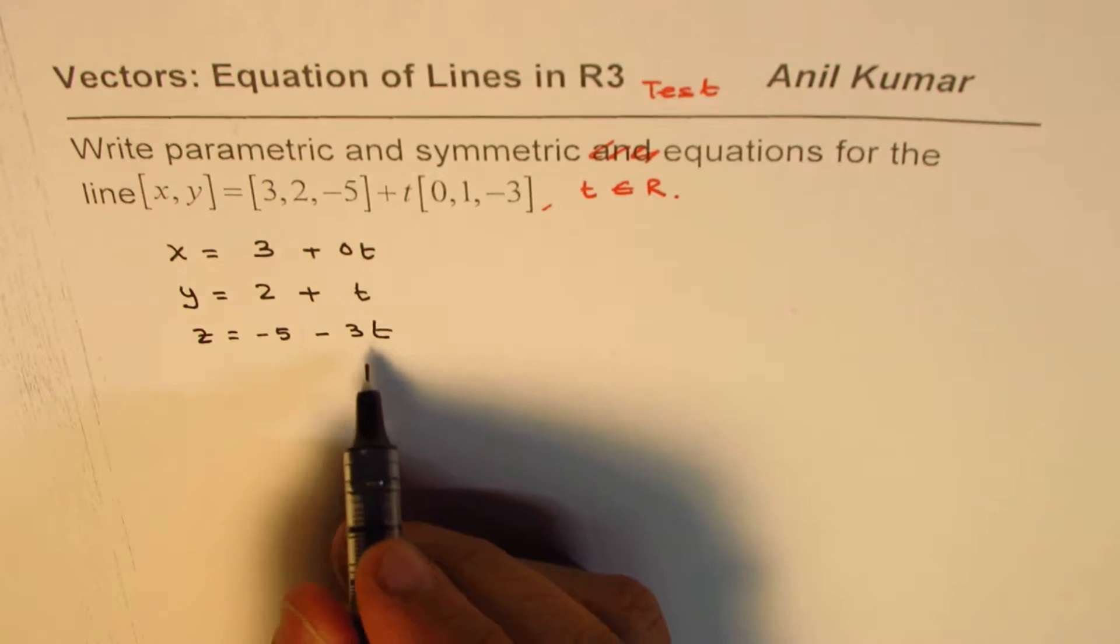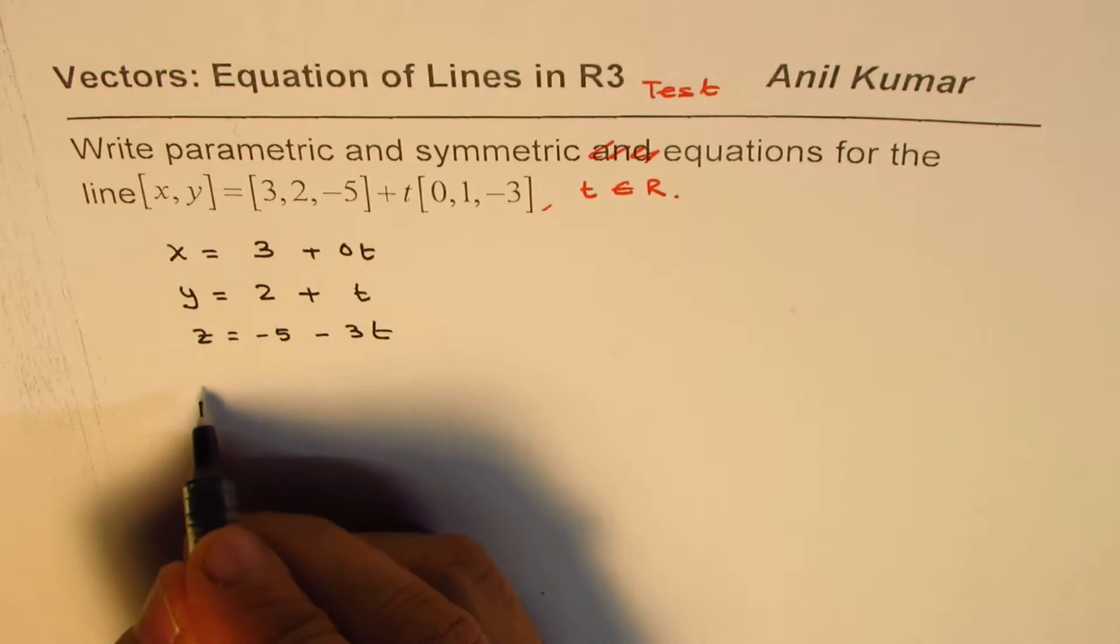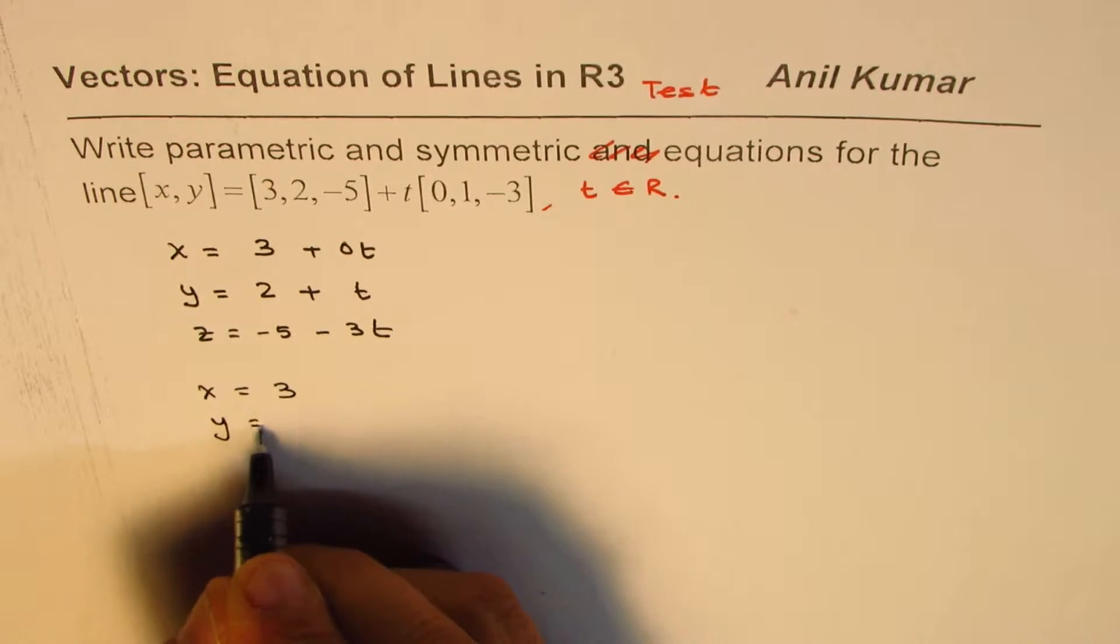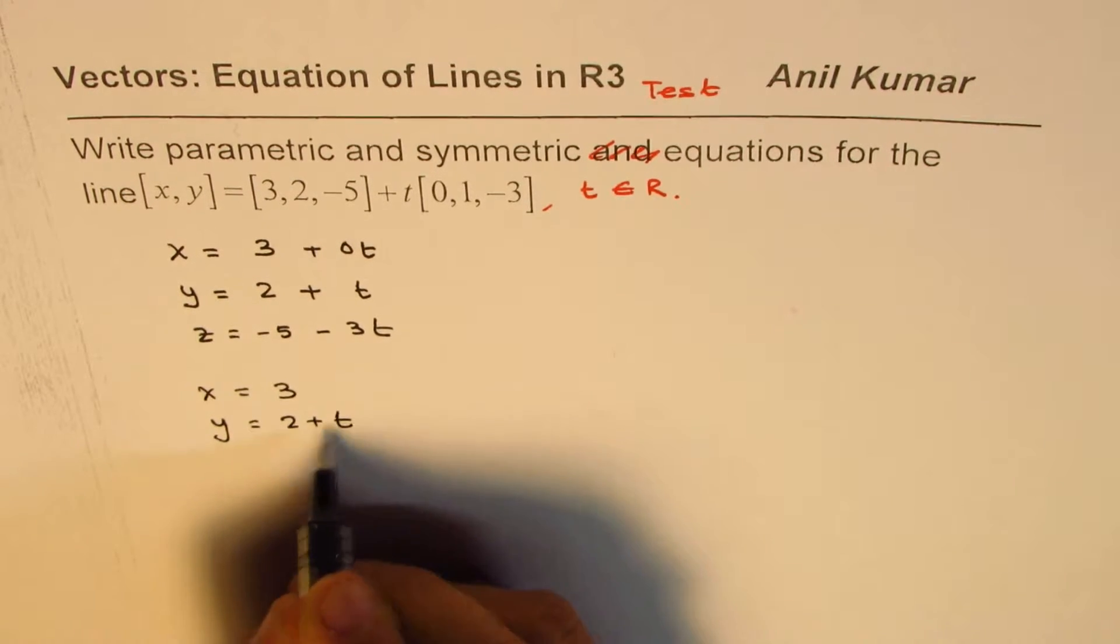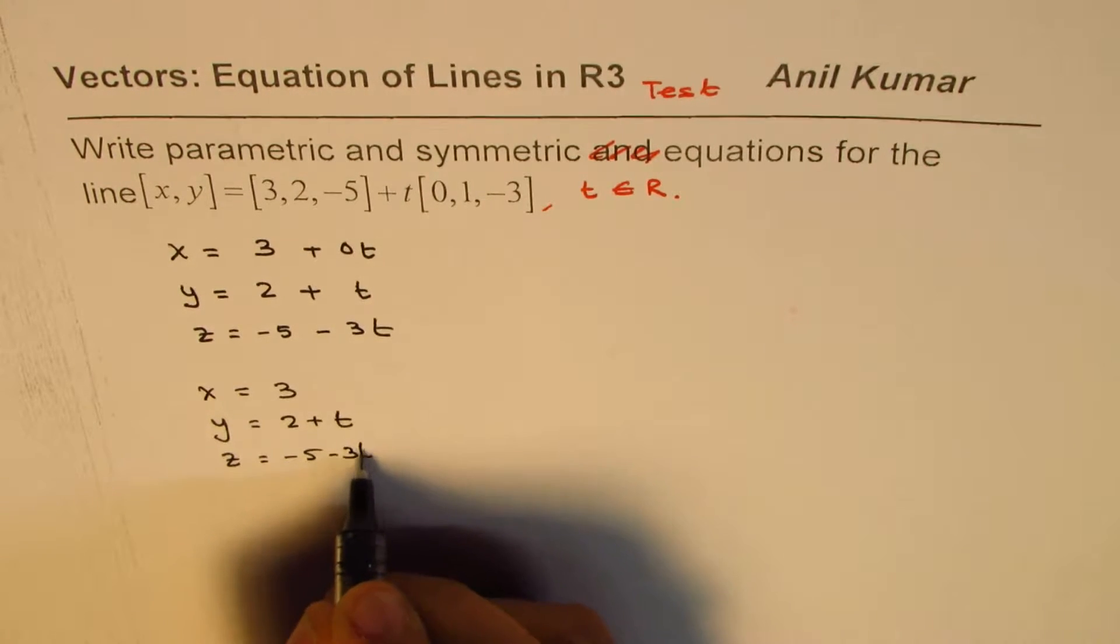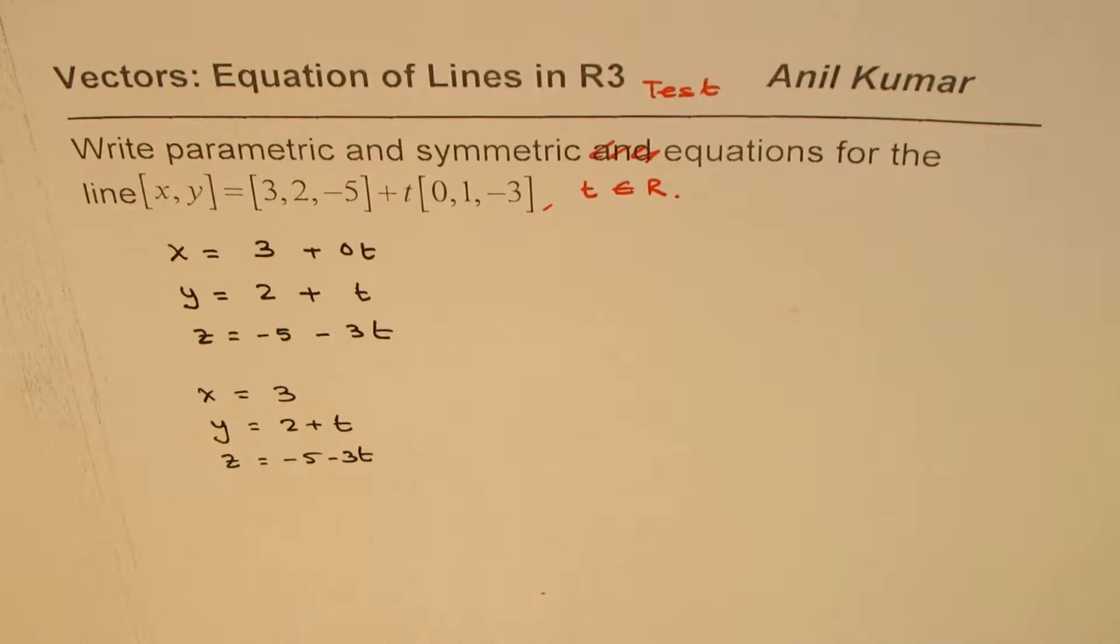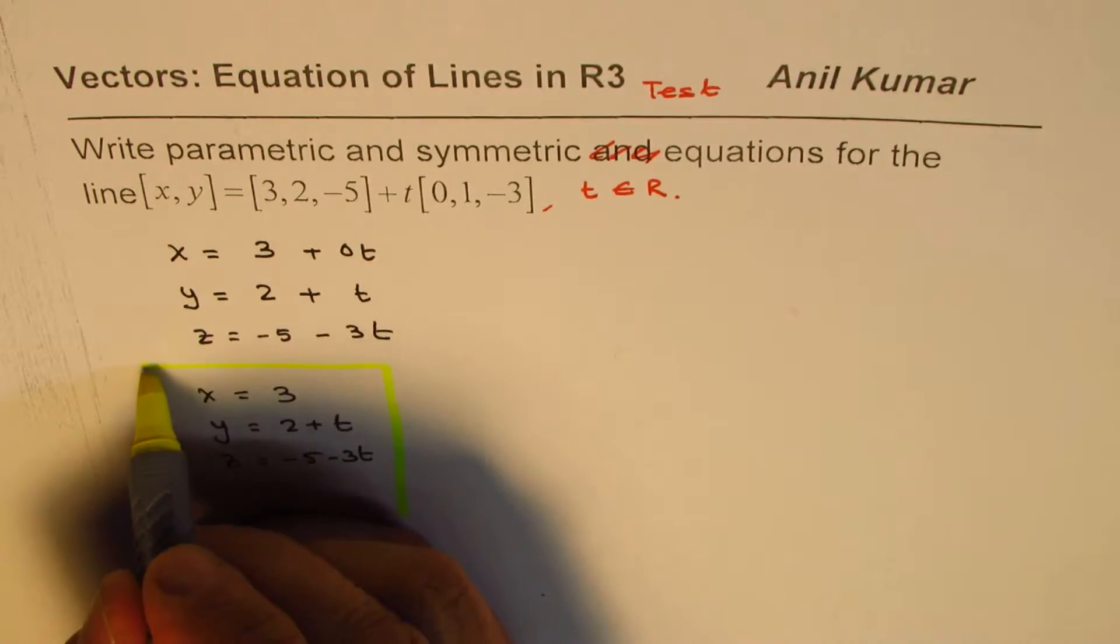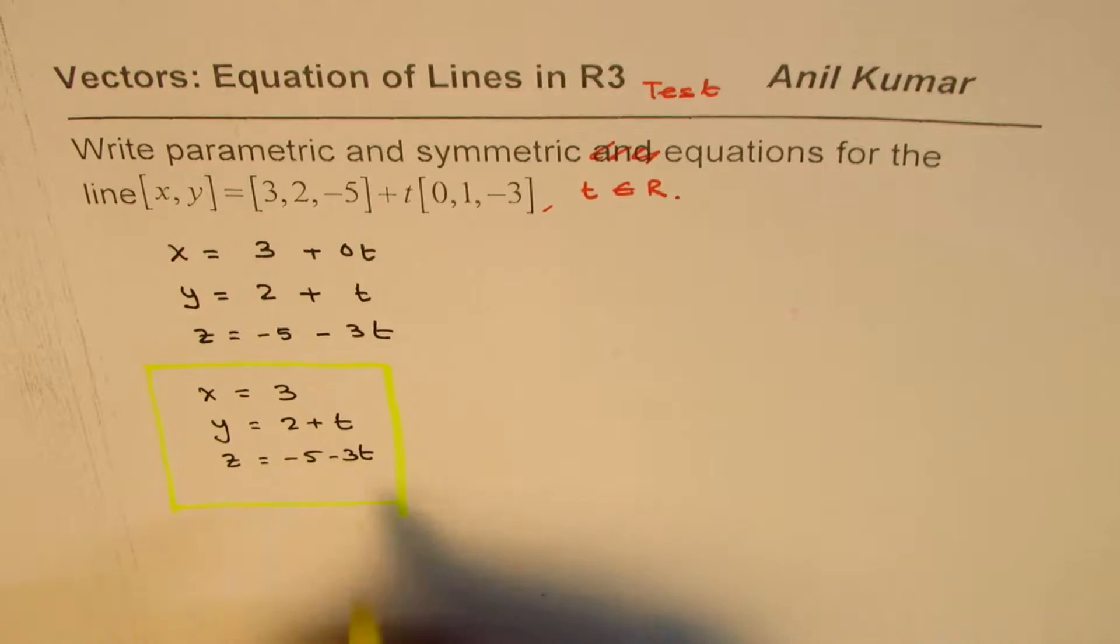So that becomes your parametric form. Let me finally write this as x equals 3, y equals 2 plus t, and z equals -5 minus 3t. So that is what we call parametric form.